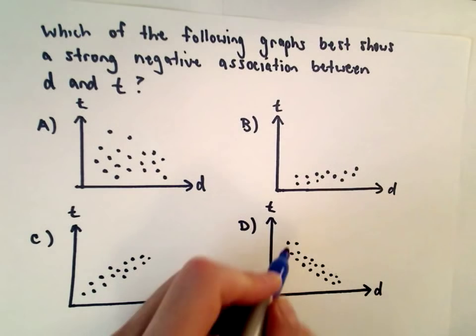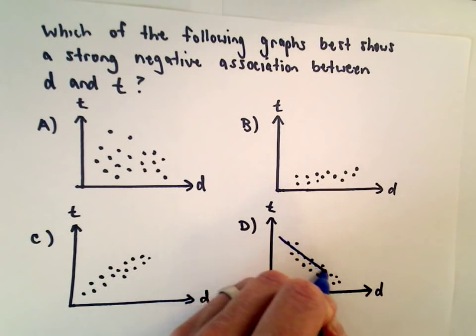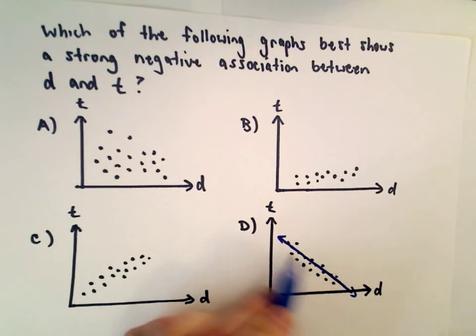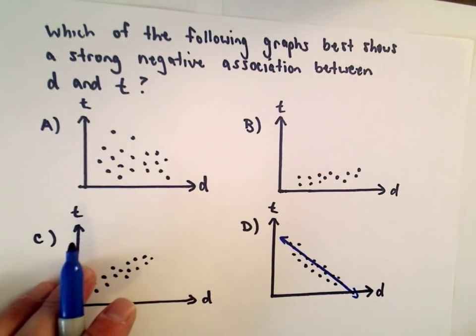If I tried to fit a line somehow through those dots, I would probably make it look something like that, roughly. This line has negative slope and the dots are very close to it. I probably could have made a slightly better looking line there.